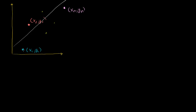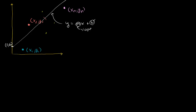What we want to do is minimize the squared error from each of these points to the line. If the equation of this line is y = mx + b — this comes straight from Algebra 1, where m is the slope and b is the y-intercept — I want to find an m and a b that defines this line so that it minimizes the squared error.